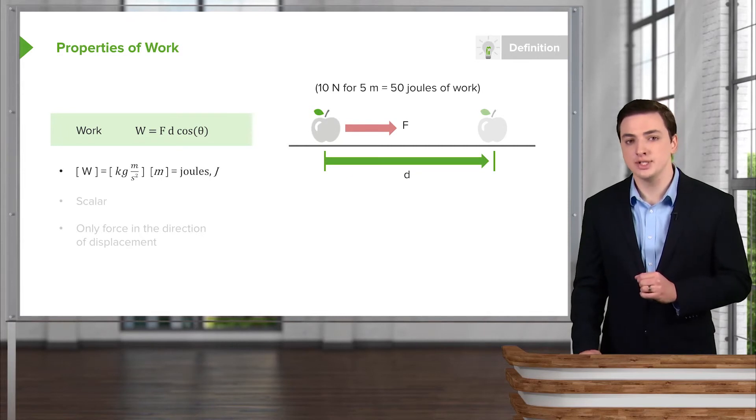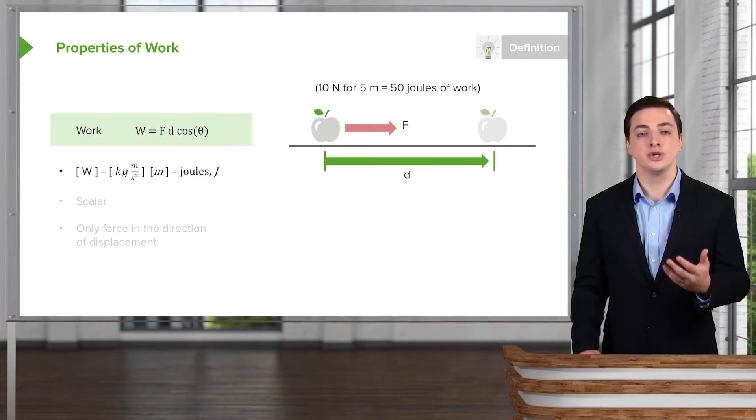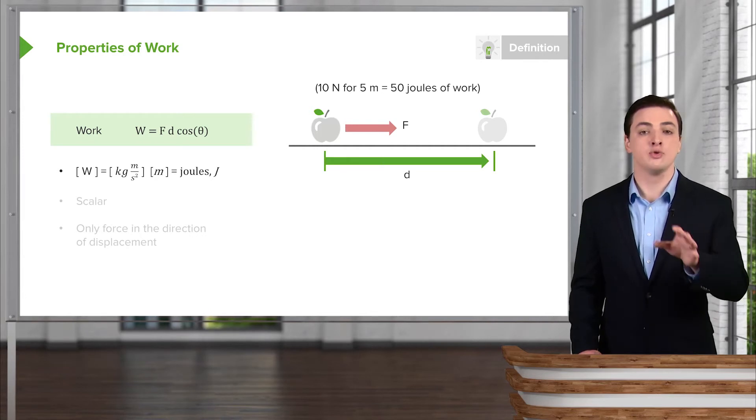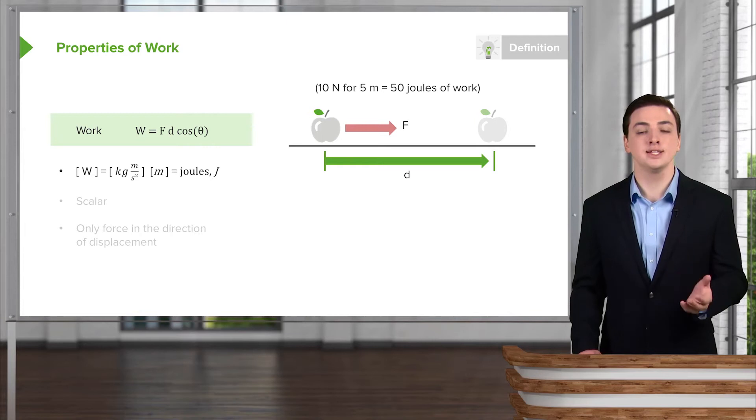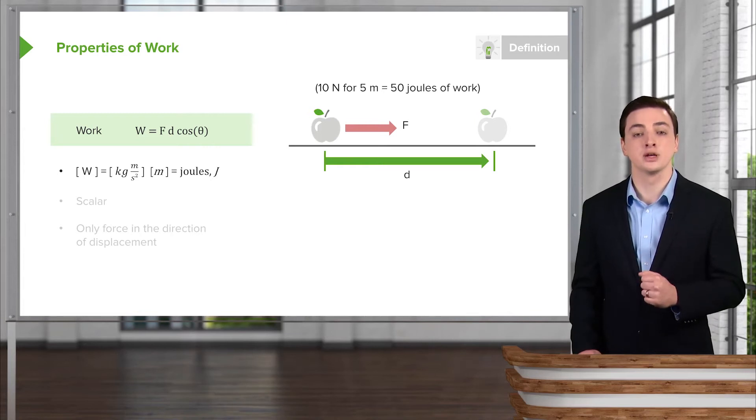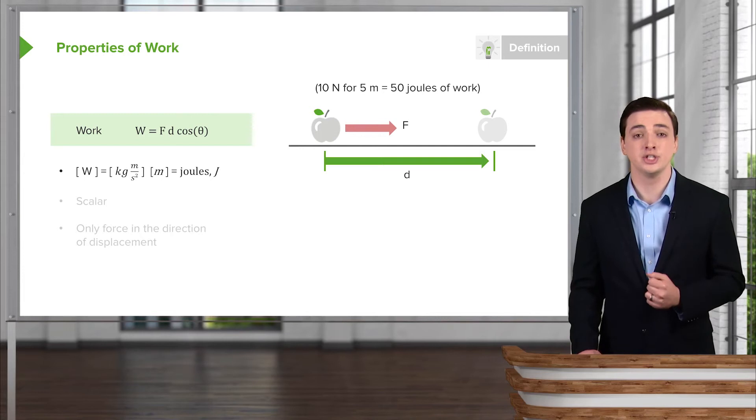So work, first of all, the units of work, as I mentioned, are units of joules, energy. So if you take a force, kilograms meters per second squared, multiply by a distance, meters, you get kilograms meters squared per second squared, which is our unit for joules. So it is an energy unit.